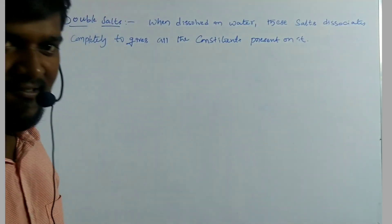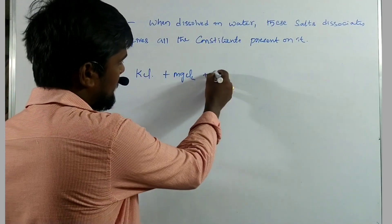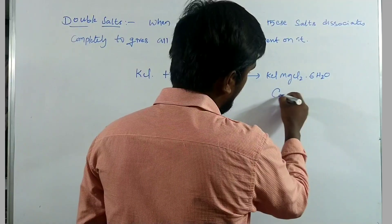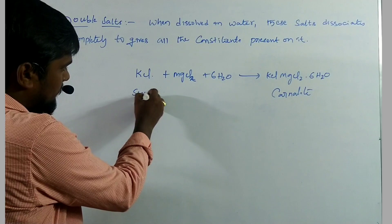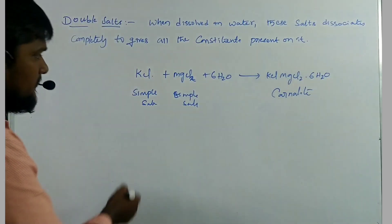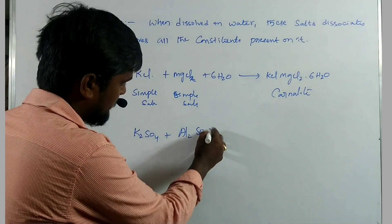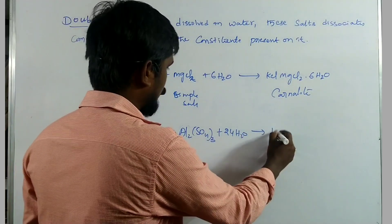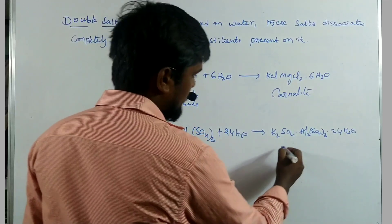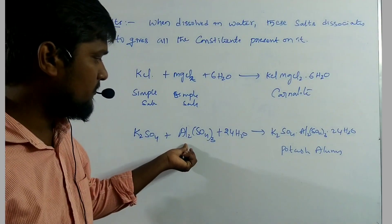Double salts are formed by the union of two simple salts. For example, KCl plus MgCl₂ in the presence of 6 moles of water gives KCl·MgCl₂·6H₂O, which is carnallite — where potassium chloride is a simple salt and MgCl₂ is also a simple salt. Another example is K₂SO₄ plus Al₂(SO₄)₃ with 24 water molecules, giving K₂SO₄·Al₂(SO₄)₃·24H₂O — which is potassium sulfate aluminum sulfate with 24 water molecules.